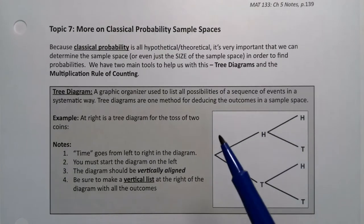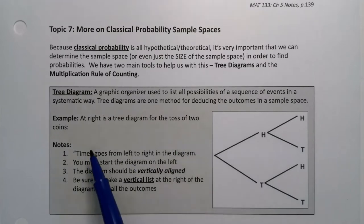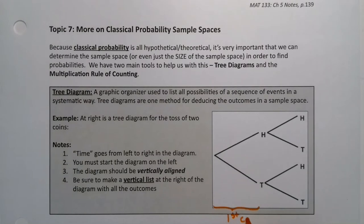This example over here is the tree diagram for the toss of two coins. So you can see heads and tails, that's the first coin. Actually, let me label it that way. So this right here is the first coin, and then the second portion is the second coin.